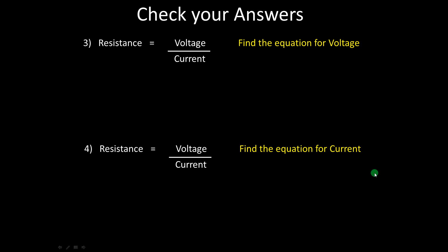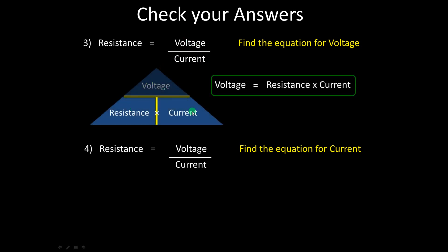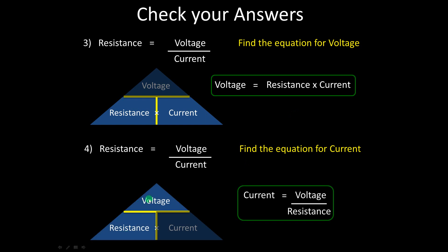For the third and fourth questions using the same equation: because it's a division equation, voltage goes on top of the triangle and resistance and current go on the bottom. To find voltage, we blank it out and get resistance multiplied by current. To find current, we blank it out and get voltage divided by resistance. This technique is well worth learning — it will save you time if your maths is a bit shaky, and it should gain you marks too. Thank you for listening.